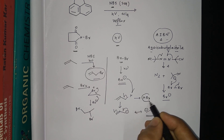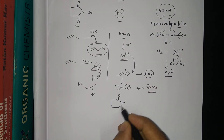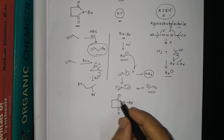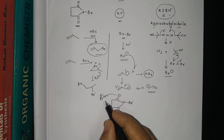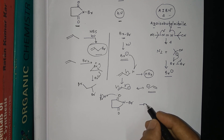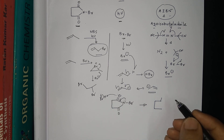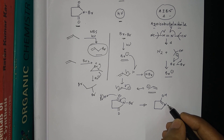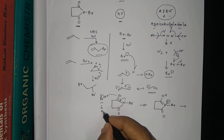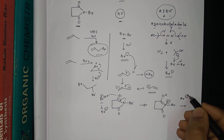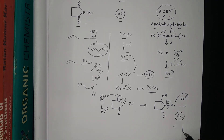The Br• takes the allylic proton and forms HBr. This HBr then reacts with NBS: the lone pair of the carbonyl oxygen takes the proton from HBr, and Br⁻ is released. This gives an N–H succinimide and Br⁻, and the Br⁻ then reacts to form a Br2 molecule.